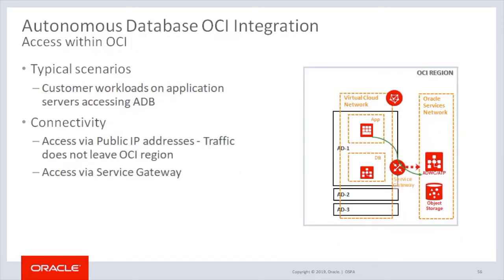For workloads that have both an application server and an Autonomous Database in the same Oracle Cloud Infrastructure region — for example, a web-hosted application on OCI infrastructure that accesses data in an Autonomous Database — access between the two is done through the public IP address of each service. However, this traffic never leaves the OCI region and is not routed through the external public internet. Instead, it is directly routed through a service gateway that connects the two services, providing higher security because traffic will never leave the data center, and providing much lower latency and better bandwidth since all traffic is routed through the internal high-speed networks in the region.